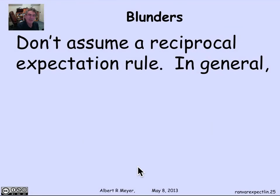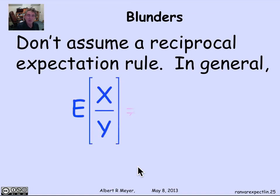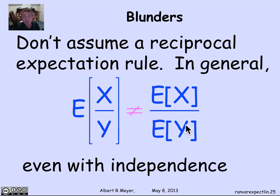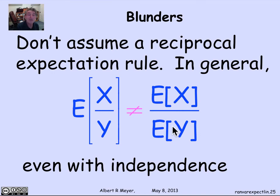There's a second blunder that's more interesting: people are tempted to assume that if the product rule holds for independence, then so should the reciprocal rule — that the expectation of X/Y equals the expectation of X divided by the expectation of Y when X and Y are independent. But it's not true. Even when they're independent, the expectation of X divided by Y is in general not equal to the expectation of X divided by the expectation of Y.